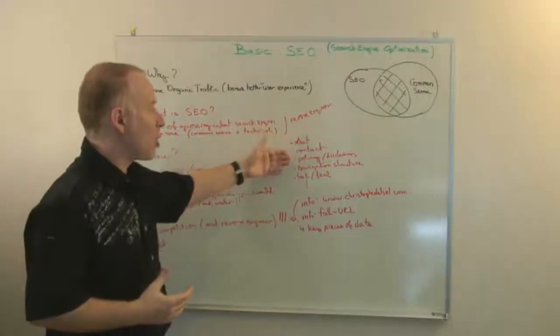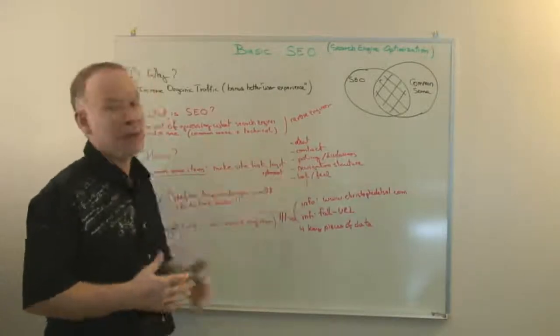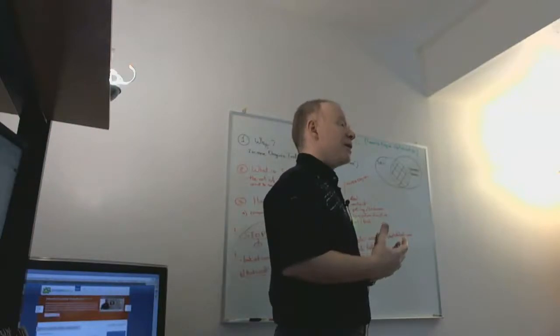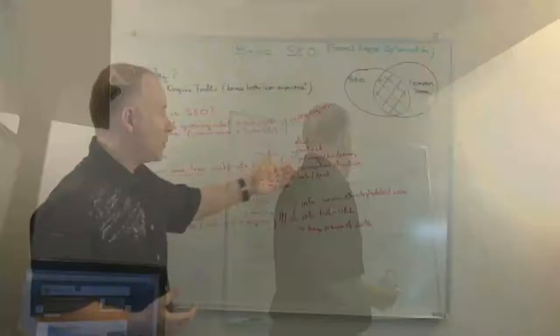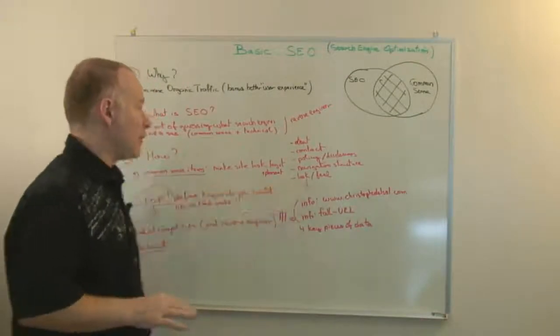Things like an about page, a contact form, a privacy policy page, or a disclosure page if applicable. You want to be upfront with people coming to your site so they know what you're about, with a nice navigation structure to make it easy to navigate around, and a pleasant look and feel.